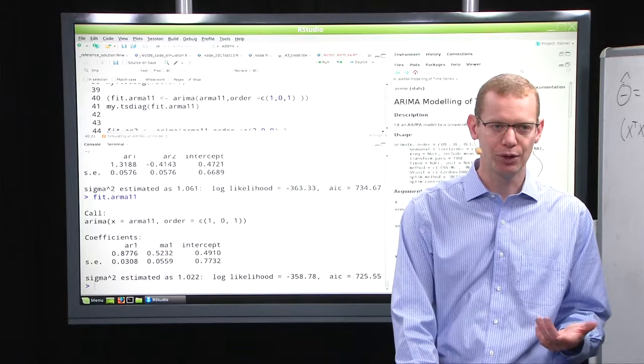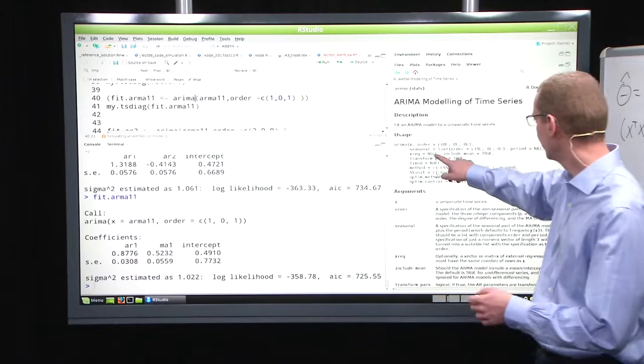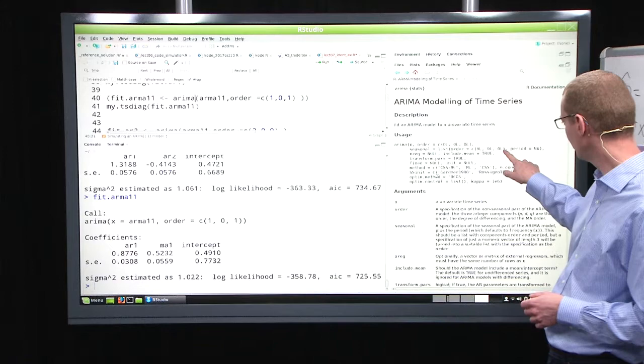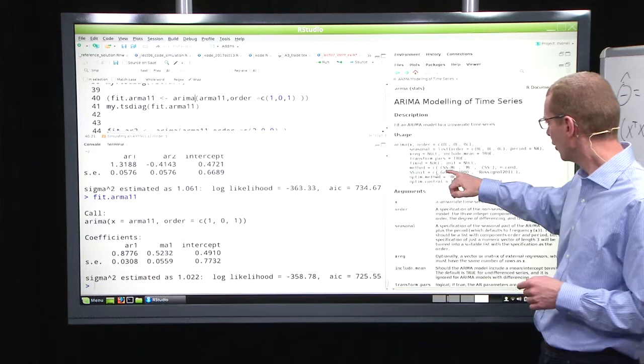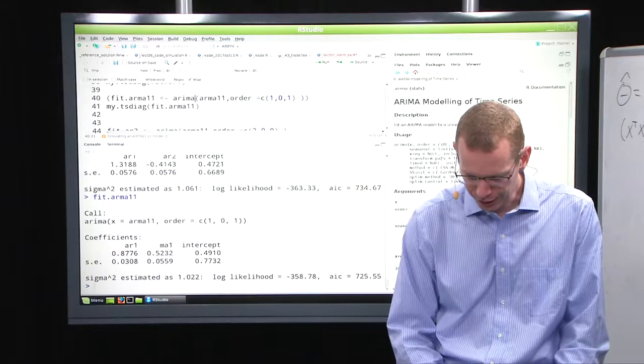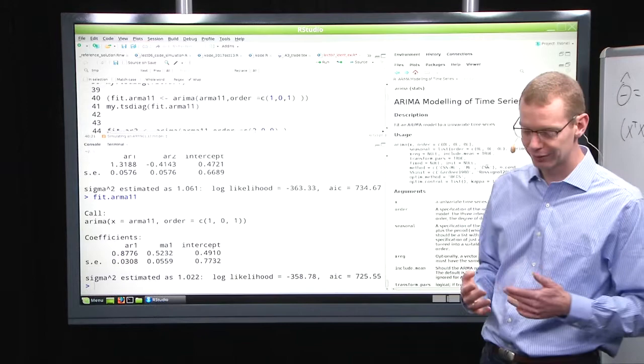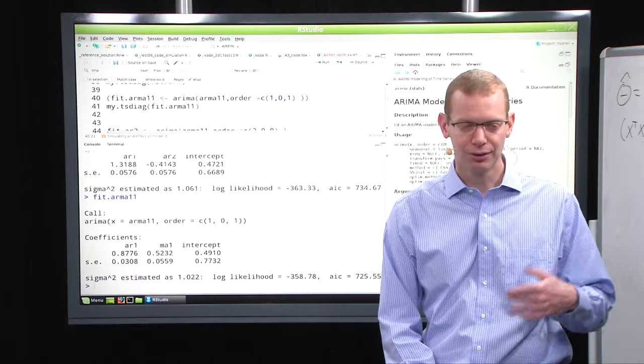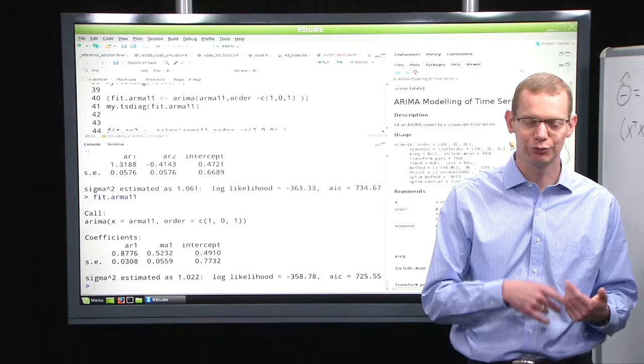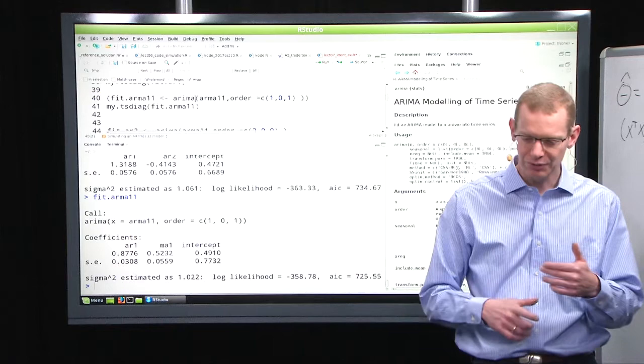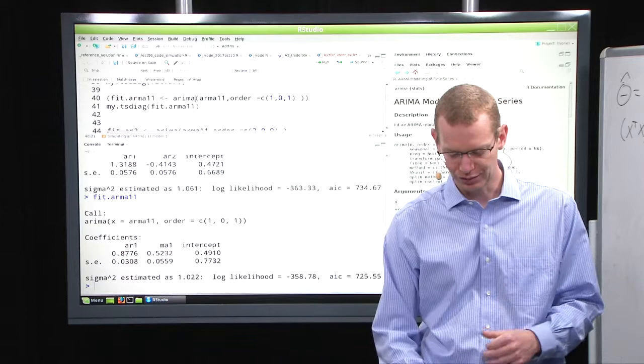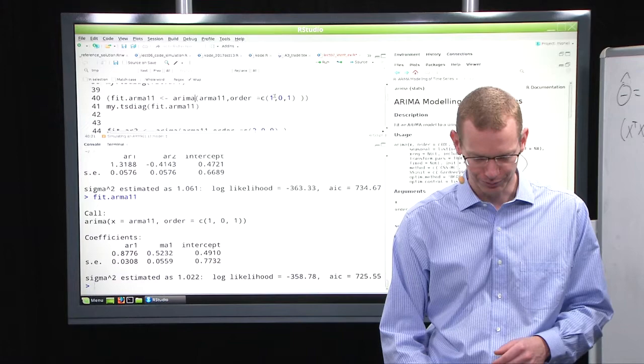When we use ARIMA to estimate parameters, we have a lot of things that we can set, including a seasonal part if we want to do that. It's just a list with the order given in the same way as the seasonal part and then the period. But what I want to get to is the optimization method, where you can have the default being the conditional sum of squares and then maximum likelihood, or a pure maximum likelihood, or a pure conditional sum of squares. The conditional sum of squares is similar to what we did in my example earlier on. The full likelihood, that's the full likelihood. The combination is to use the conditional sum of squares, which is computationally fast, as an initial estimate when starting the maximum likelihood estimate, because then we are close to the true maximum likelihood estimate when we start our algorithm.